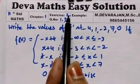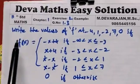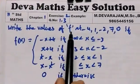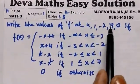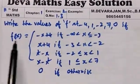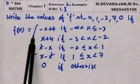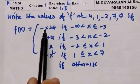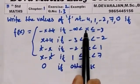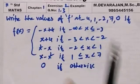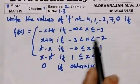X is 1.3, Q2. Write the values of f at minus 4, 1, minus 2, 7, 0, if the function f of x equals minus x plus 4 for x order value interval, with x less than or equal to minus 3.